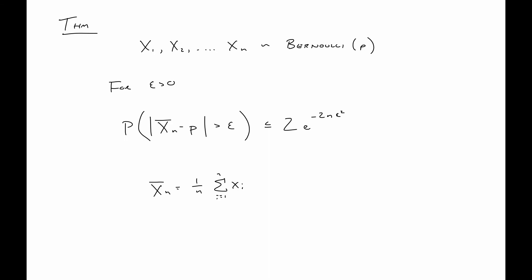Before we show an example of this, we're going to state another inequality, which is basically just a particular instance of the inequality I just showed. Now we're going to assume that X1 through Xn are Bernoulli p. So then we want to look at this probability, that exact probability we're looking at in the example: the probability that the distance between the sample mean and the true mean is bounded below by epsilon.